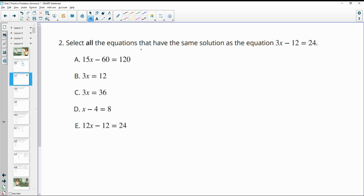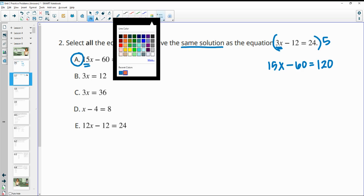Number 2, select all equations that have the same solution as this equation. So very similar to what we looked at in the last slide, just a different way to say that. So now we're looking at same solution. So in Part A, we see that to take 3x to the 15x, we would be multiplying by 5. So let's see if we multiply everything by 5 here. So 3 times 5 is 15x. Negative 12 times 5 is negative 60. And 24 times 5 is 120. That is the same equation as we have in A, so those are going to have the same solution.